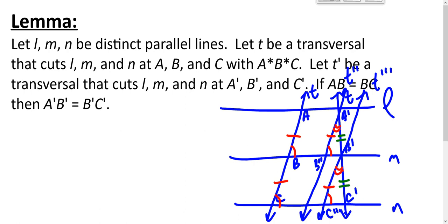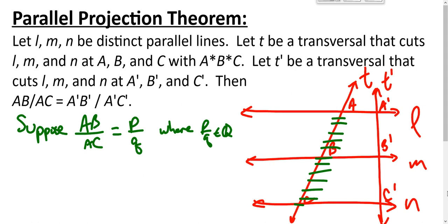Now why does that matter? Apply the lemma Q times here. Each of these little pieces is congruent to each of these little pieces. They're all in the same ratio. And so sure enough, AB is to AC as A prime B prime is to A prime C prime. We apply the lemma over and over and over again.